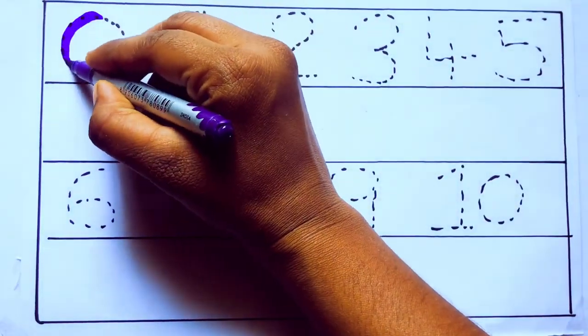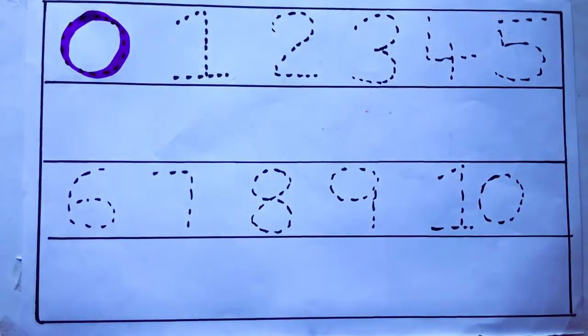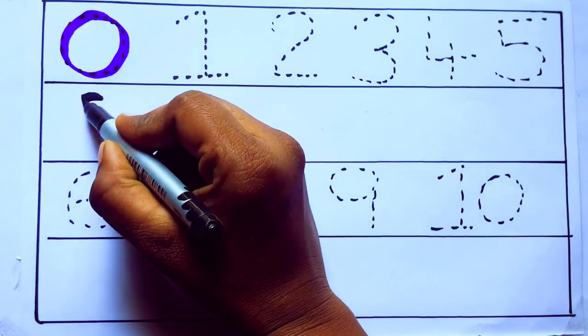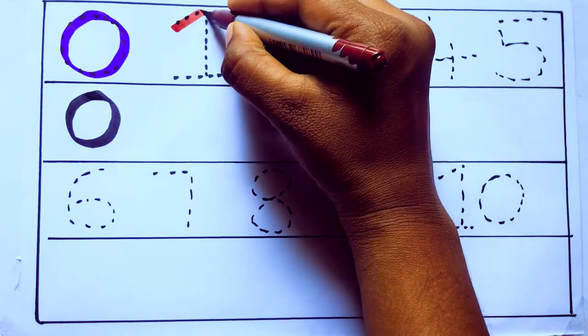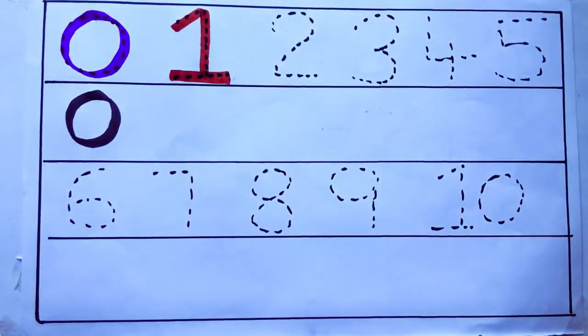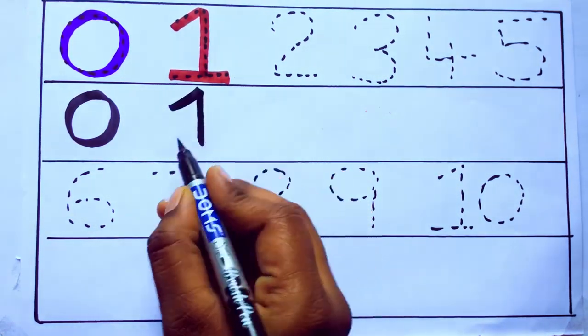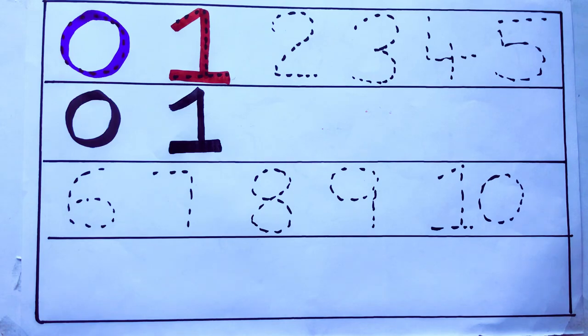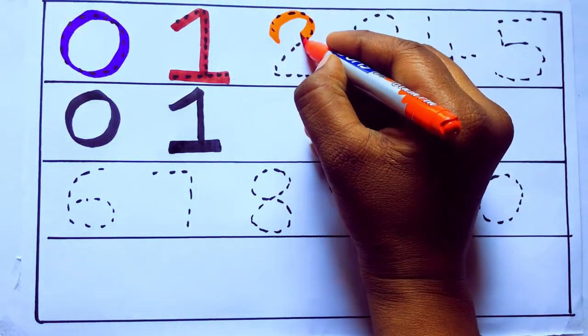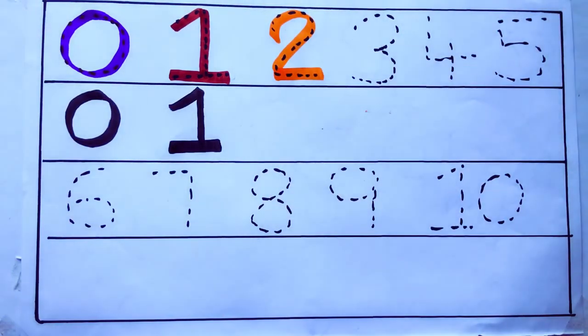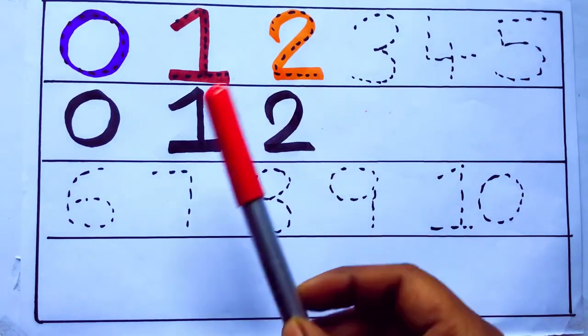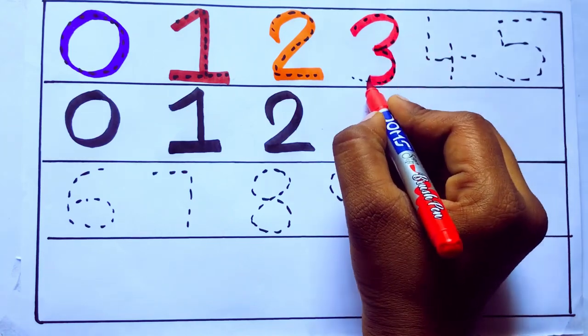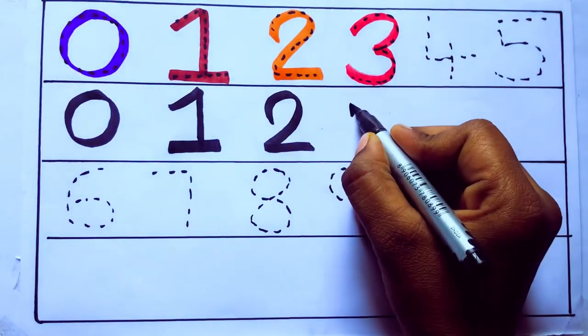Violet color 0, Z-E-R-O. Brown color 1, O-N-E, number 1. Orange color 2, T-W-O. Red color 3, THREE, number 3.